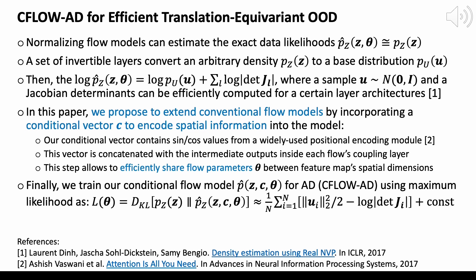In this paper, we propose to extend conventional flow models by incorporating a conditional vector to encode spatial information into the model. Our conditional vector contains sine and cosine harmonics from a widely used positional encoding module. This vector is concatenated with the intermediate outputs inside each flow's coupling layer, which allows efficiently sharing flow parameters between feature map spatial dimensions.